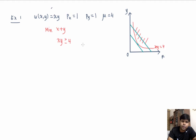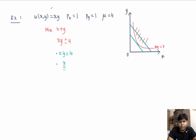There are two properties this point satisfies. First, it lies on the curve xy equal to 4, which is our indifference curve. Second, at this point the marginal rate of substitution equals the price ratio. The MRS here is y over x, and this should equal px over py, which is the slope of the iso-expenditure curves. Together, these two conditions give us x equals 2 and y equals 2, which is our Hicksian demand.